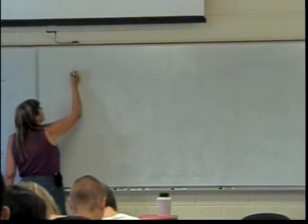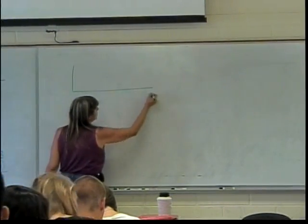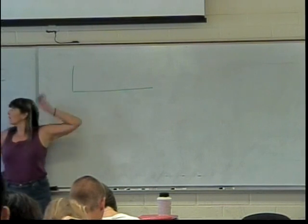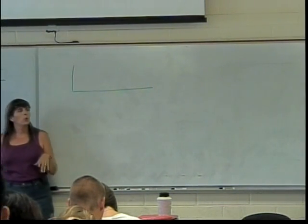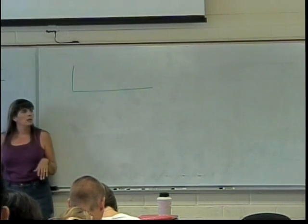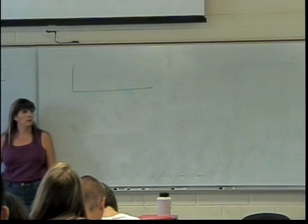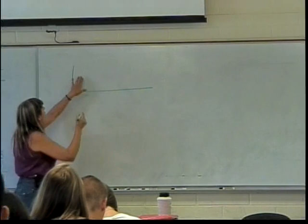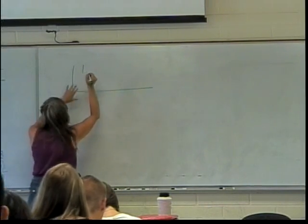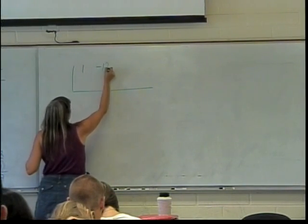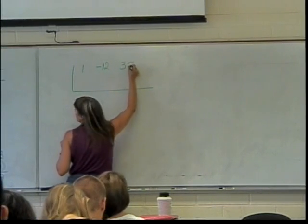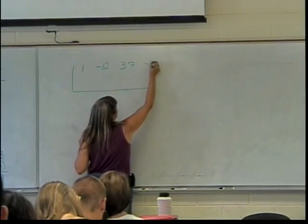We make a symbol that looks kind of like a big L, and on the inside — just like the inside of a long division problem — we put the dividend. But we're only going to put the coefficients. So I have a coefficient of 1, a coefficient of negative 12, a coefficient of 37, and then my constant term is negative 23.